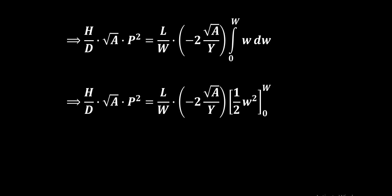Now that is same as H by D into root A into P square to the right side equal to L by W into minus 2 root A by Y. Now what is the integration of W dW? That is equal to half of W square and the limits are 0 to W.